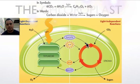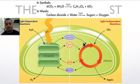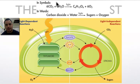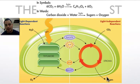Let's look at the overall equation. Three things go in: water, light, and carbon dioxide. Two things come out: oxygen and glucose. That's the photosynthesis equation in a nutshell.